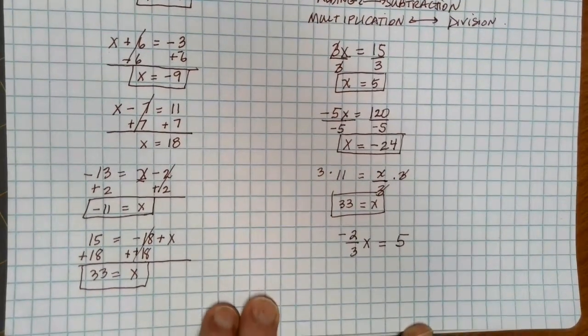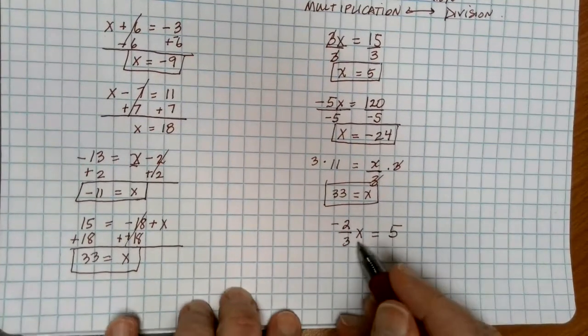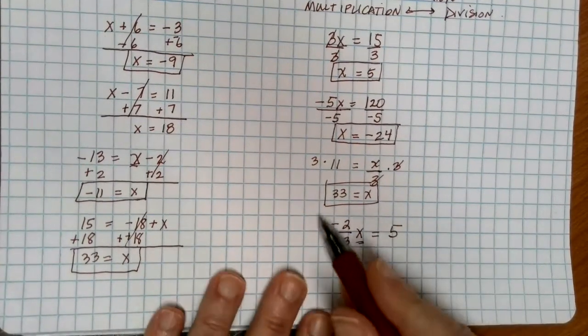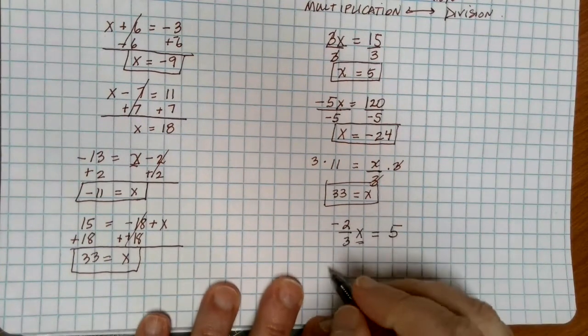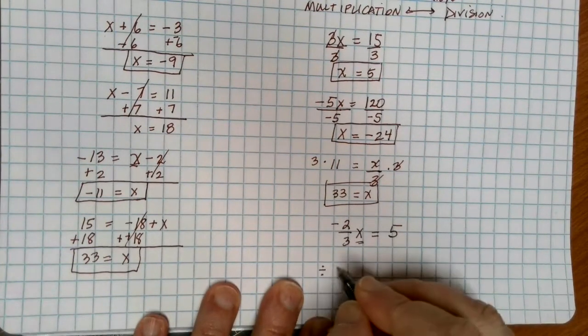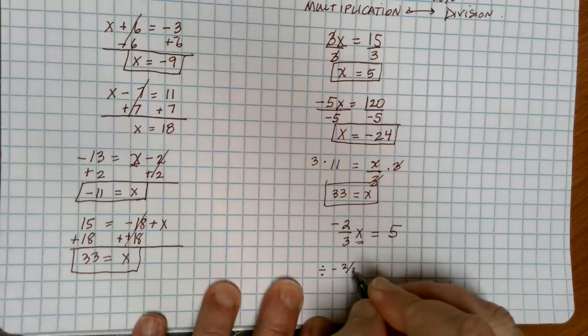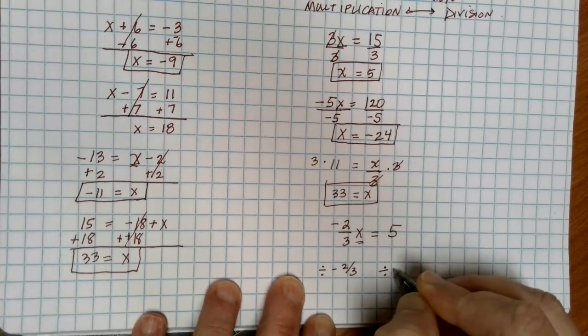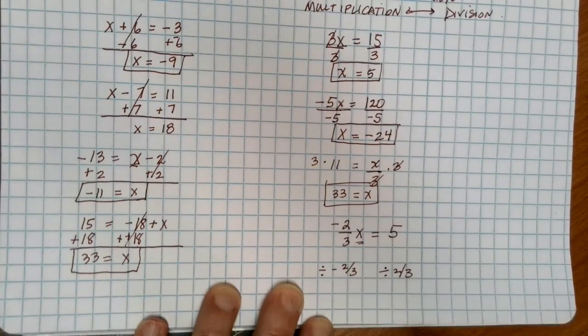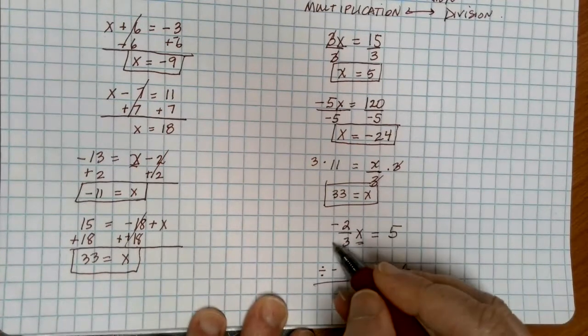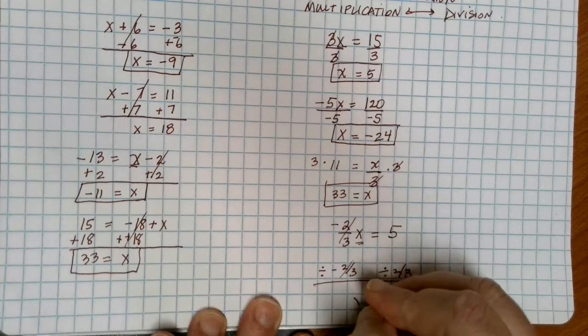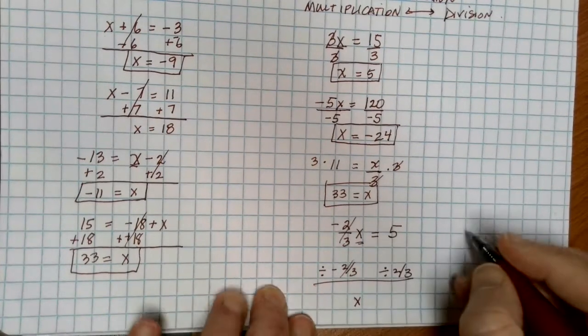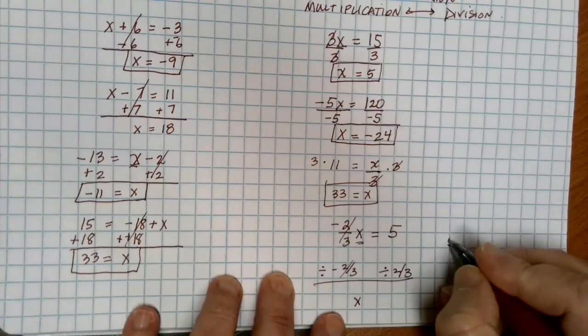Let's look at this one. In this case, I have an x. What's being multiplied by it, however, is negative 2 thirds. Well, to get rid of multiplying by negative 2 thirds, I'm going to need to divide both sides by negative 2 thirds. Timesing by negative 2 thirds and dividing by negative 2 thirds undoes itself, and leaves me just with x.